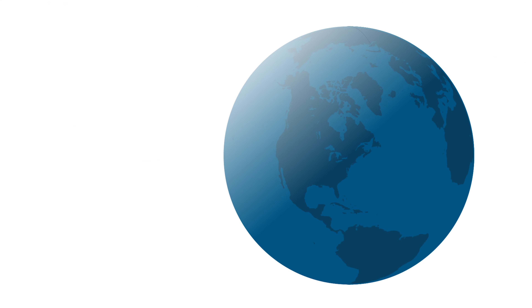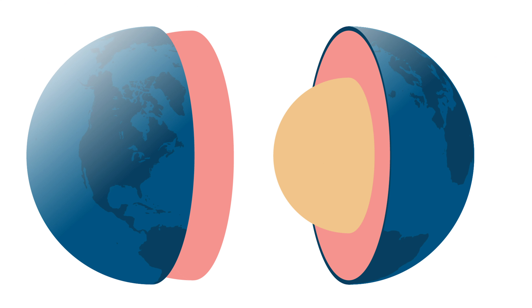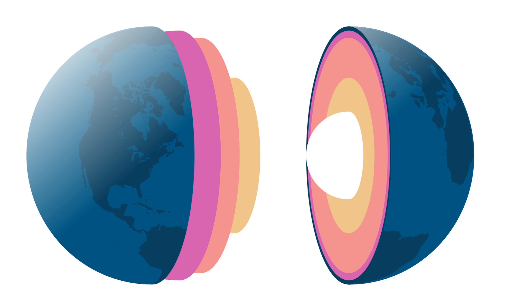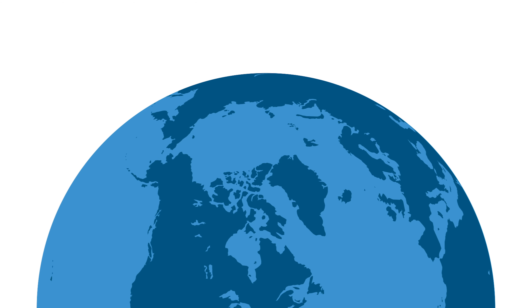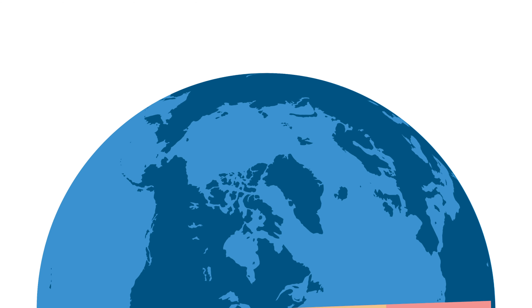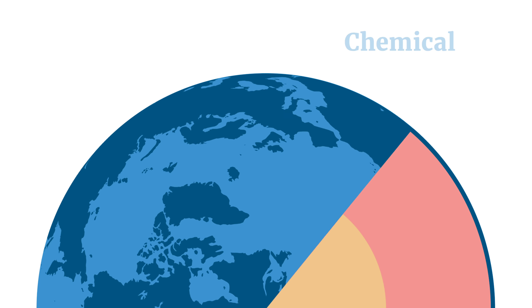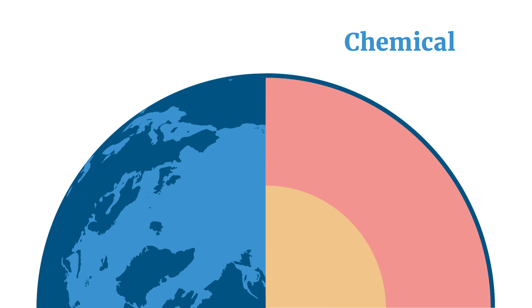Earth is divided up into several distinct and separate layers. These layers can be defined in a couple of different ways. First off, you can define how the composition changes with depth. These are the layers that you're probably most familiar with: the crust, mantle, and core.